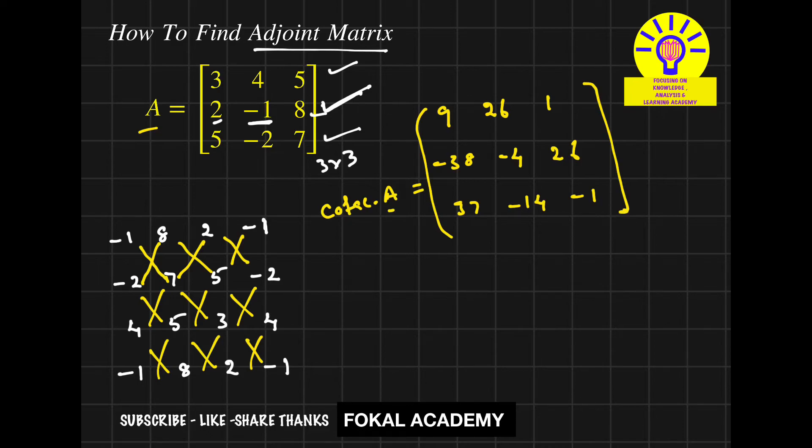Now we know that adjoint matrix is equal to the cofactor matrix A transpose. Its transpose is nothing but adjoint matrix. Now apply transpose for this matrix. We will get adjoint matrix of A.